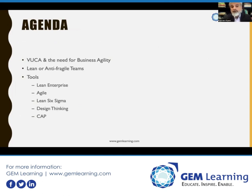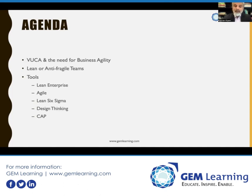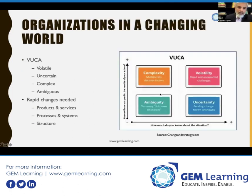First, I'm going to talk about VUCA and the need for business agility — what it means to run a business in a VUCA environment. Second, what does lean mean in this context, and if you're familiar with lean, what does it mean to have an anti-fragile team. Third, we'll talk about tools available to help us develop lean teams. Those are the three areas I'll be touching on over the course of this webinar.